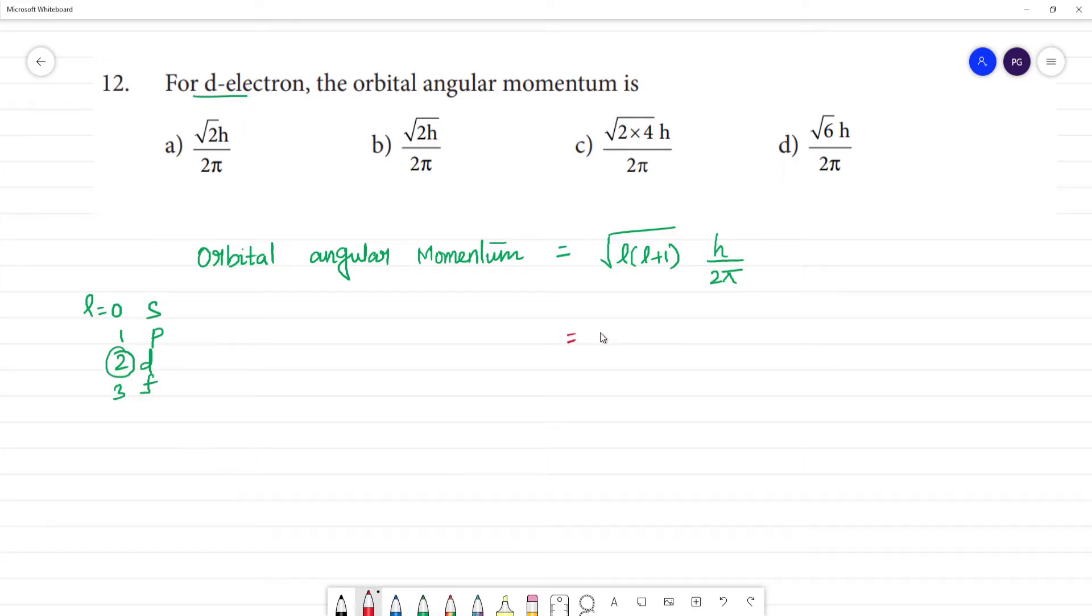Now substitute: square root of 2 into 2 plus 1 into h by 2 pi. So 2 into 3 equals 6, giving square root of 6 into h by 2 pi.